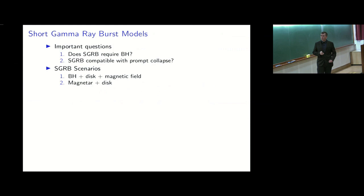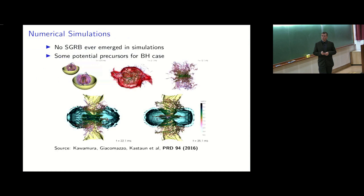Regarding short gamma-ray bursts, the key questions are whether an SGRB requires a black hole — since then we can constrain the remnant outcome — and whether an SGRB is compatible with prompt collapse, since prompt collapse typically leaves almost no disk and most models need a disk. The two scenarios are a black hole embedded in a magnetized disk or a magnetar embedded in a disk. Numerical simulations give some hints: there are promising precursors for the black hole case, with one simulation by Ruiz finding a mildly relativistic outflow that might form a real jet. A recent simulation of the magnetar scenario found discouraging results: the magnetic field structure was disordered and the density along the rotation axis remained far too high to allow a jet — the most important obstacle for the magnetar scenario.